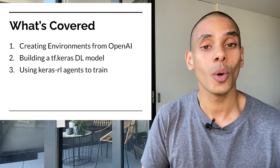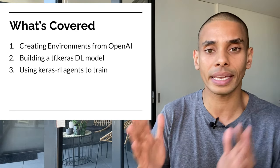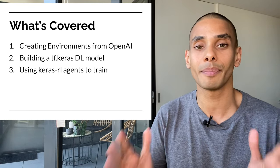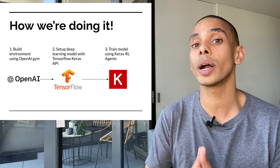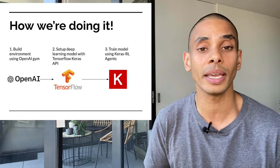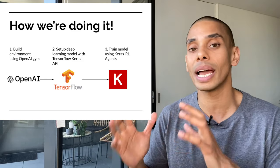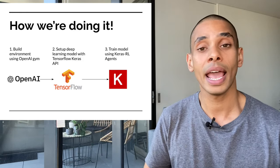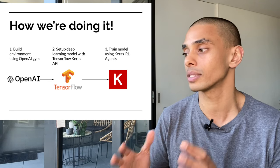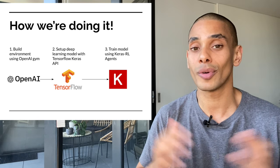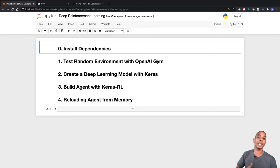In this video we're going to cover everything you need to get started with reinforcement learning. We'll start out by creating an environment using OpenAI Gym, then build a deep learning model using TensorFlow and Keras. That model will then be passed to Keras-RL to train our reinforcement learning model using policy-based learning. We'll be working in Python inside a Jupyter Notebook. Once built and trained, we'll save the model down into memory and reload it for deployment into production.